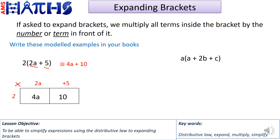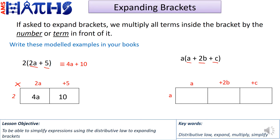Now let's do this example where a letter or term is outside the bracket, and there are three terms inside the bracket. We use the same method: I've drawn three boxes, split up the terms in the brackets above the boxes, and the term in front goes to the left. So a times a is a squared, a times positive 2b is 2ab, and a times c is ac. Our answer is a squared plus 2ab plus ac.